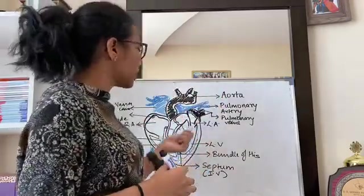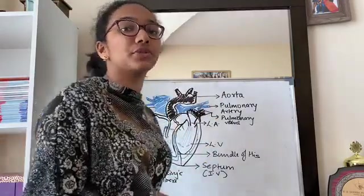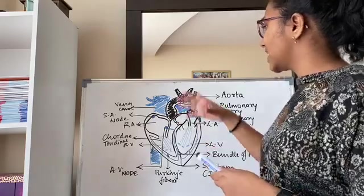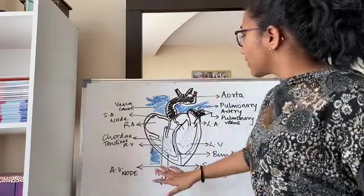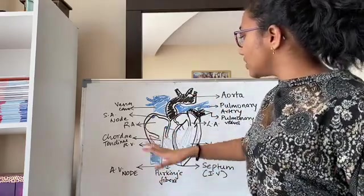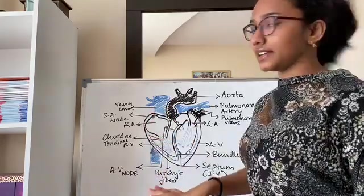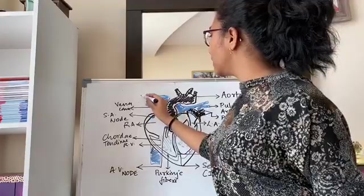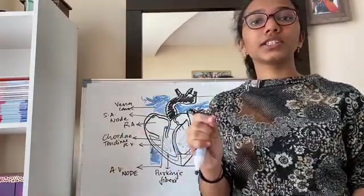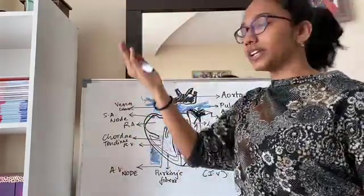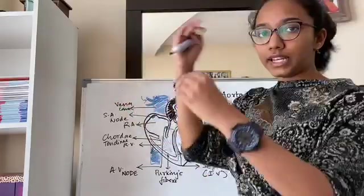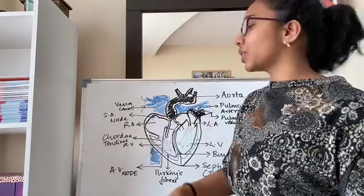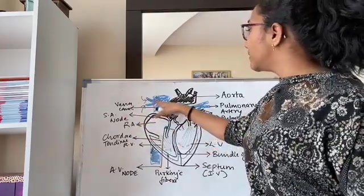Now let's look at all the valves and the blood vessels. The circulation—let's start it with right atrium. Vena cava has two parts: superior vena cava which brings deoxygenated blood from the upper body, and inferior vena cava that brings the deoxygenated blood from the lower part of the body.